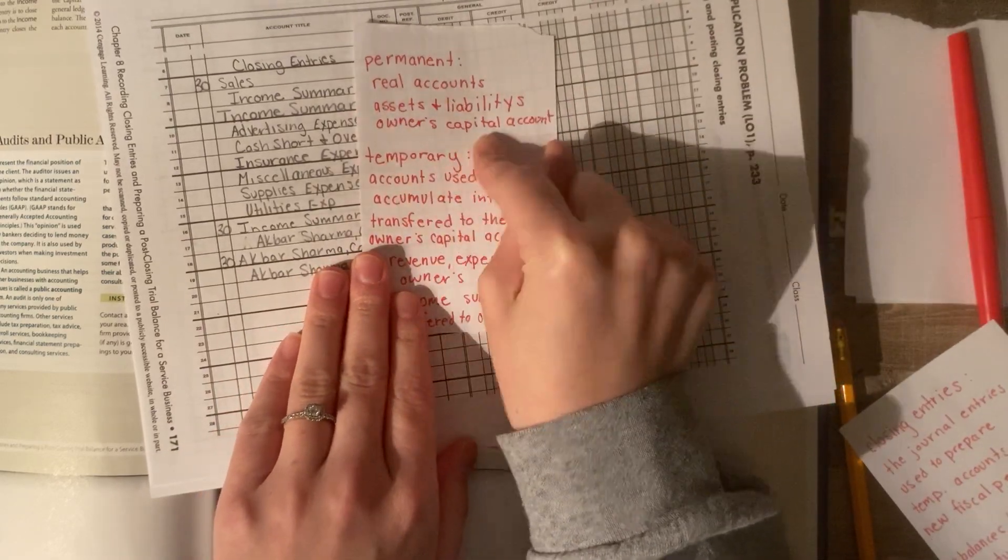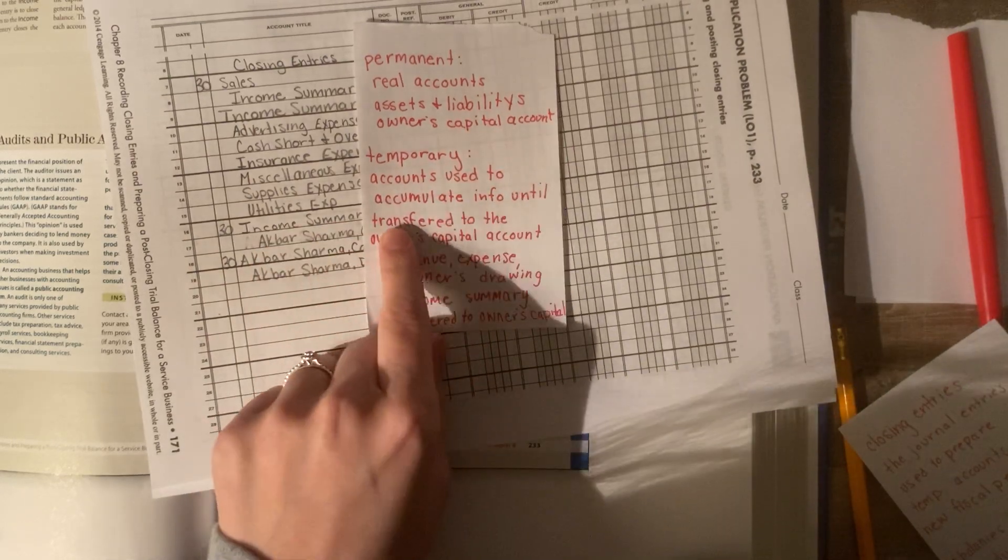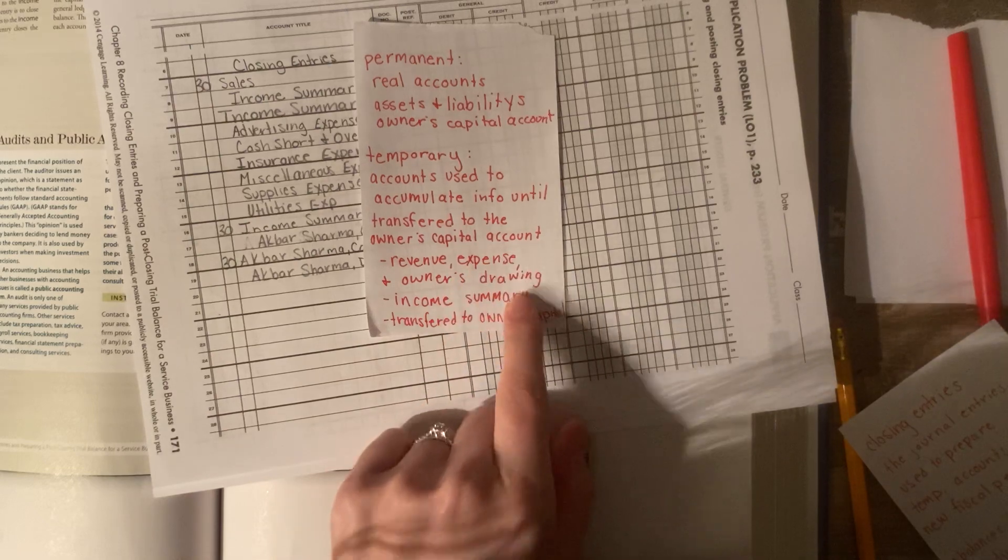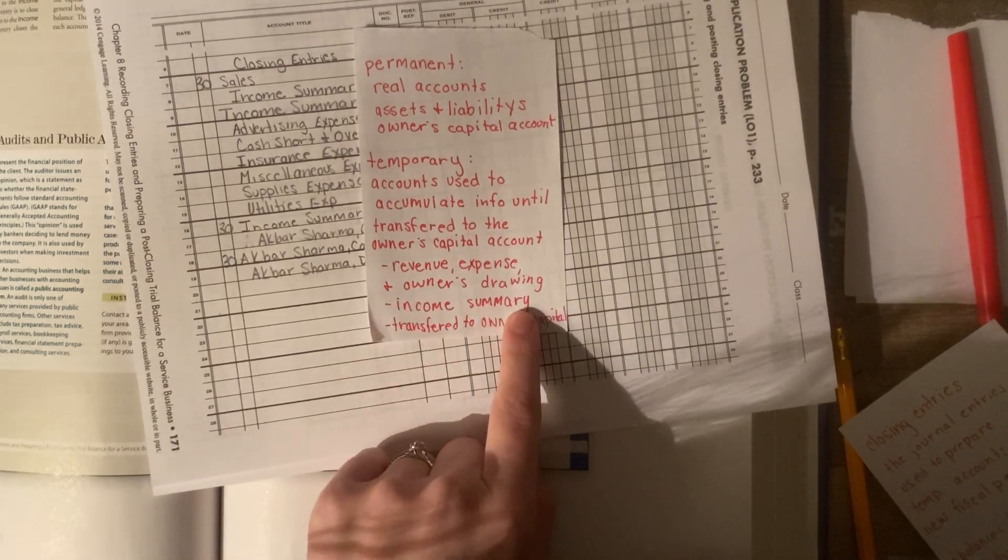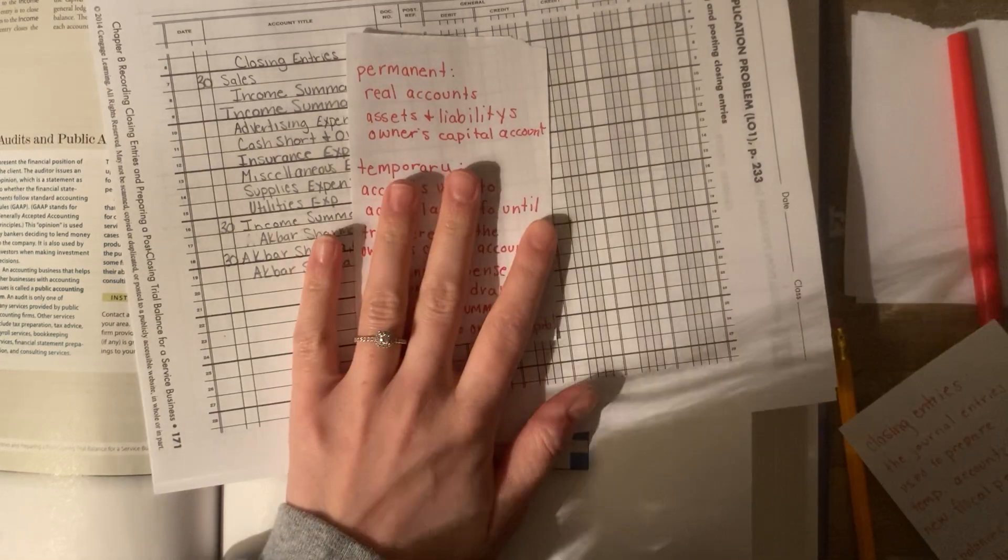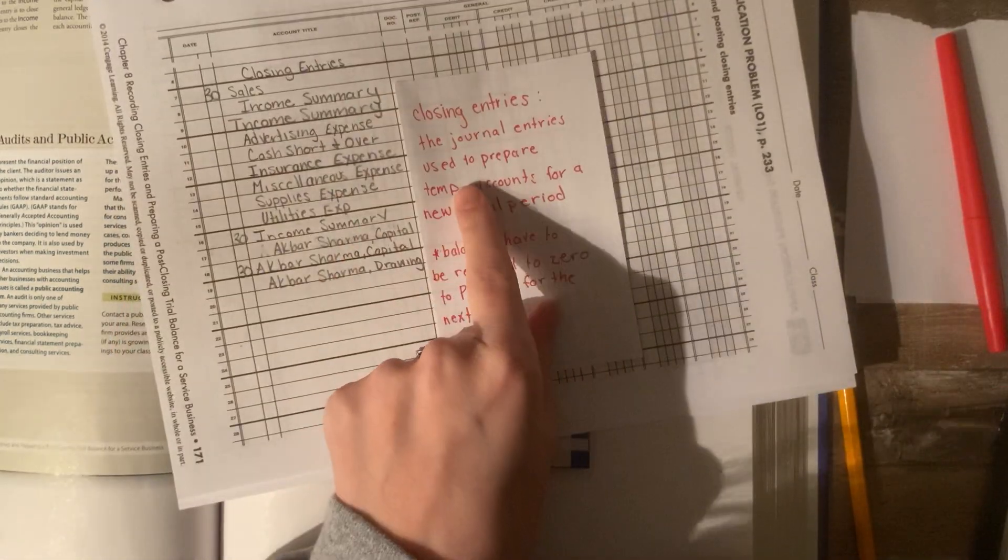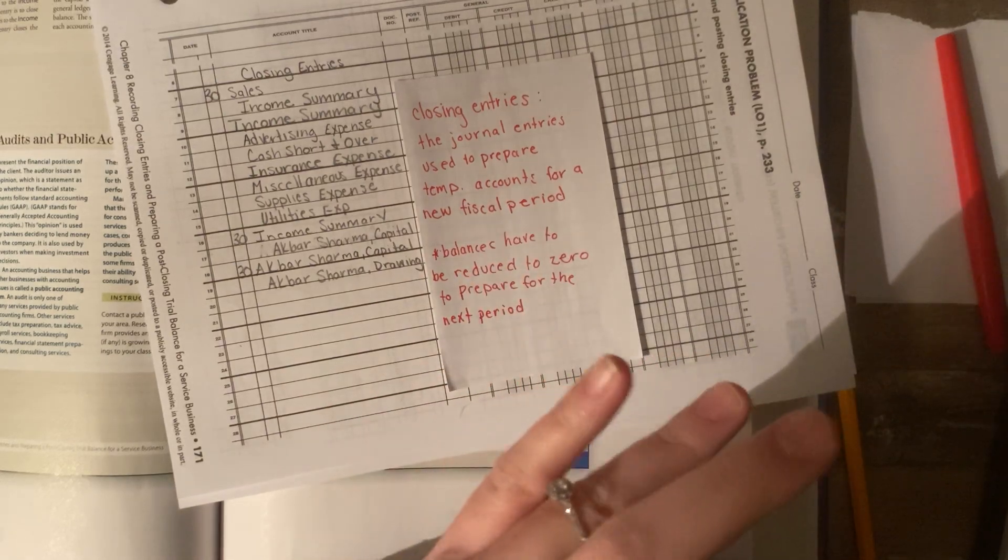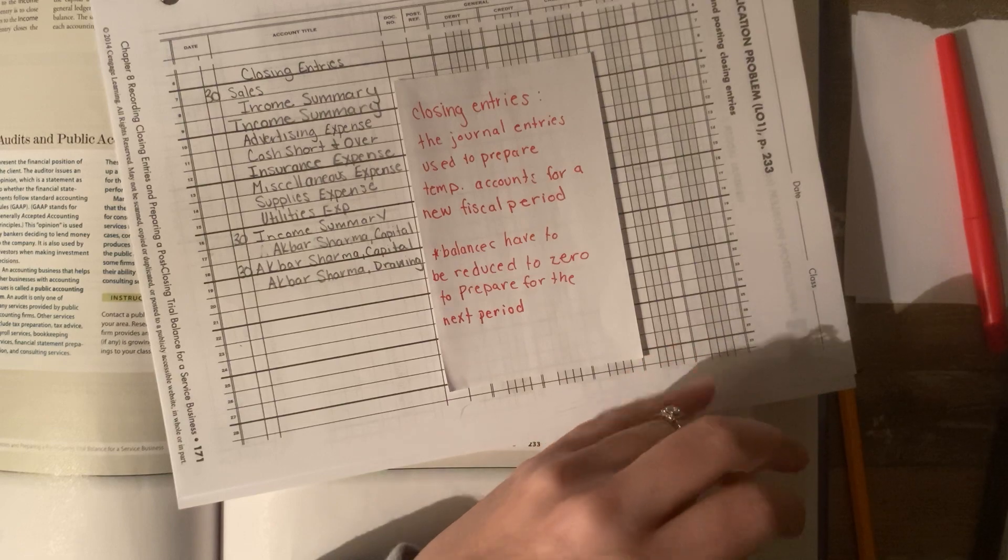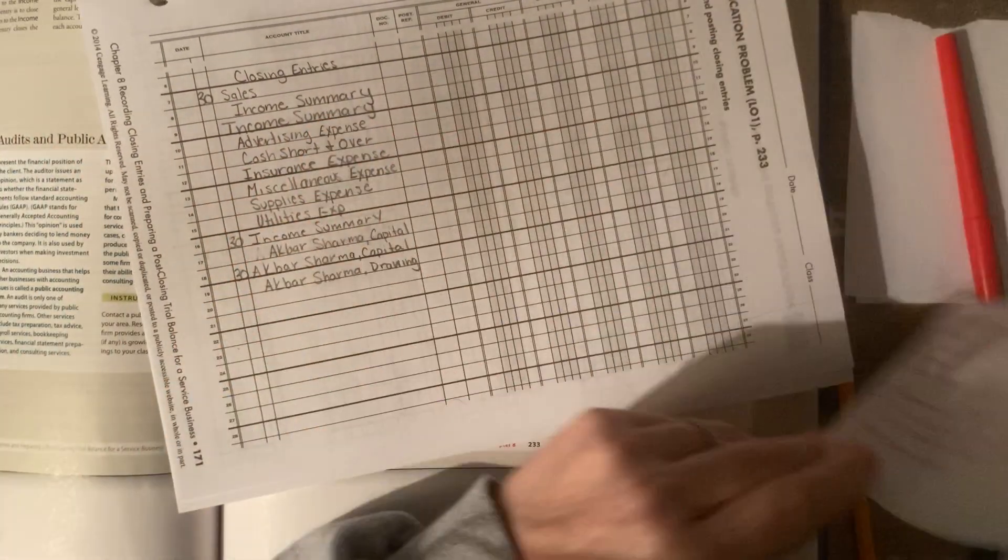So, we have your permanent accounts and your temporary accounts, which I discussed before. Permanent accounts are real accounts. So, your assets, liabilities, and owner's capital account. Your temporary accounts are your revenue expenses, owner's drawing, income summary. And those get transferred to the owner's capital. This is standard. It's not a trick. We have your closing entries. These entries are the journal entries used to prepare temporary accounts for a new fiscal period. And the balances have to be reduced to zero to prepare for the next period.